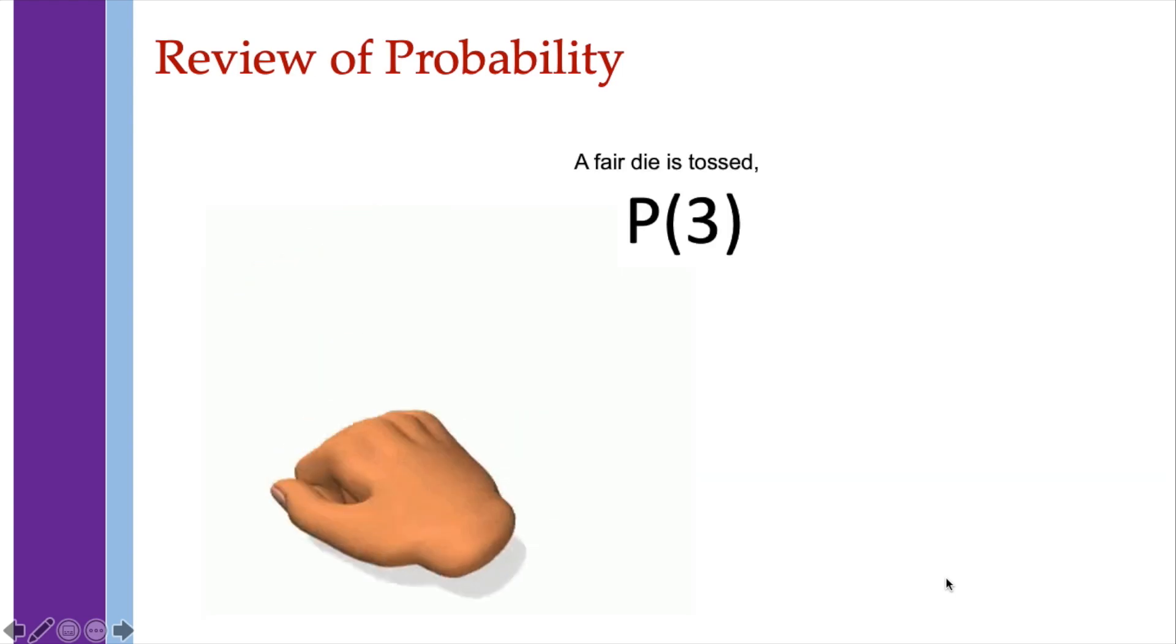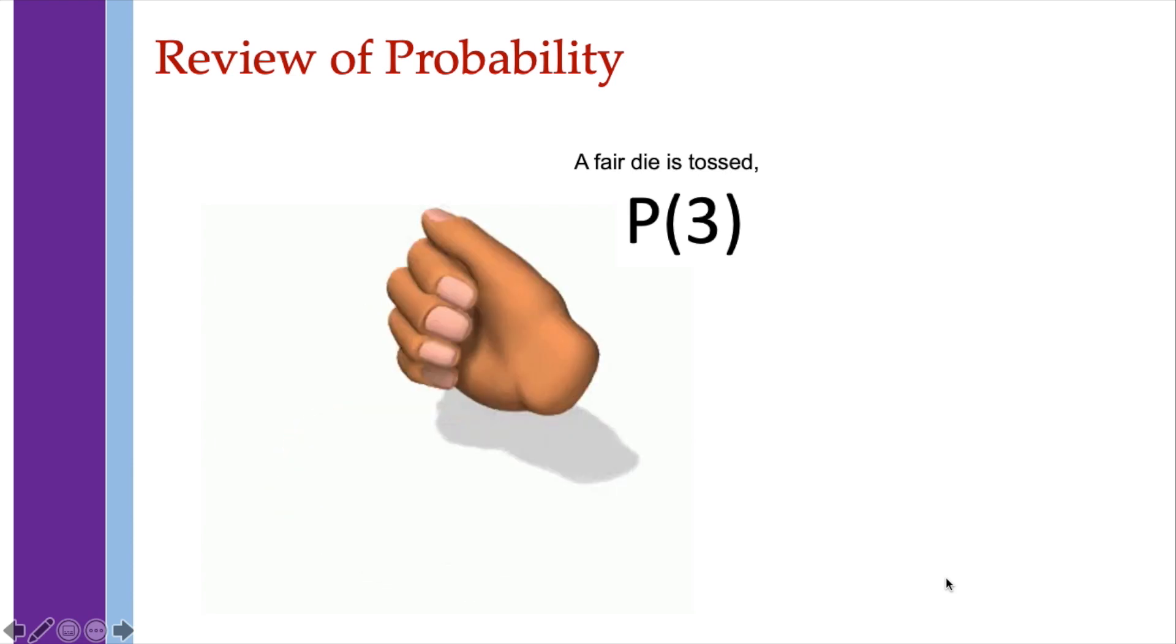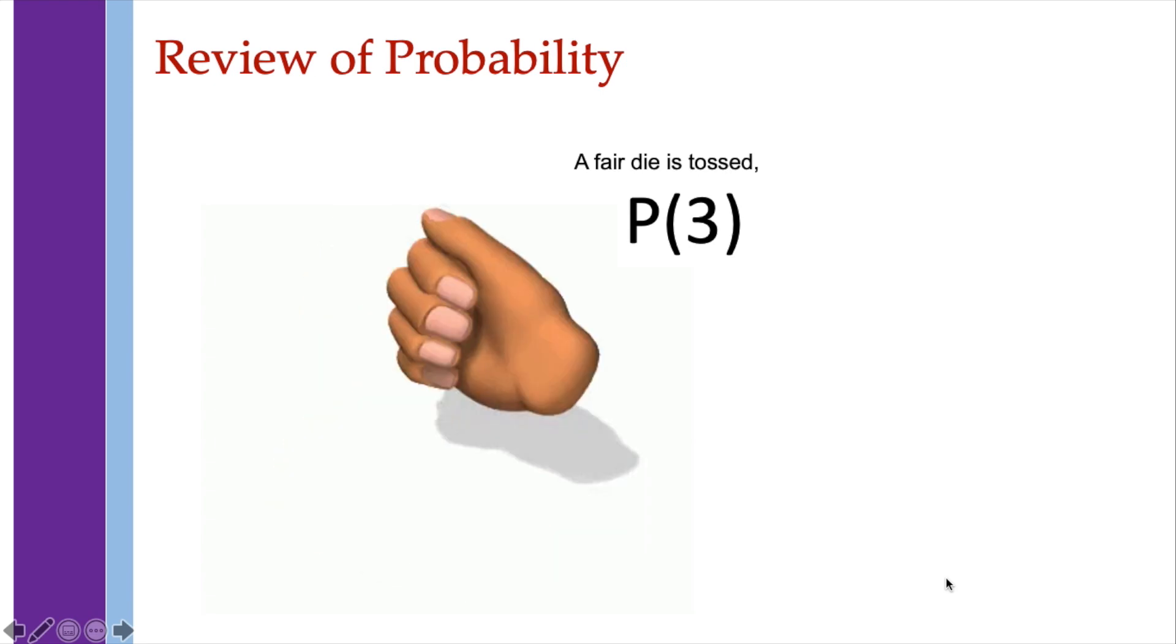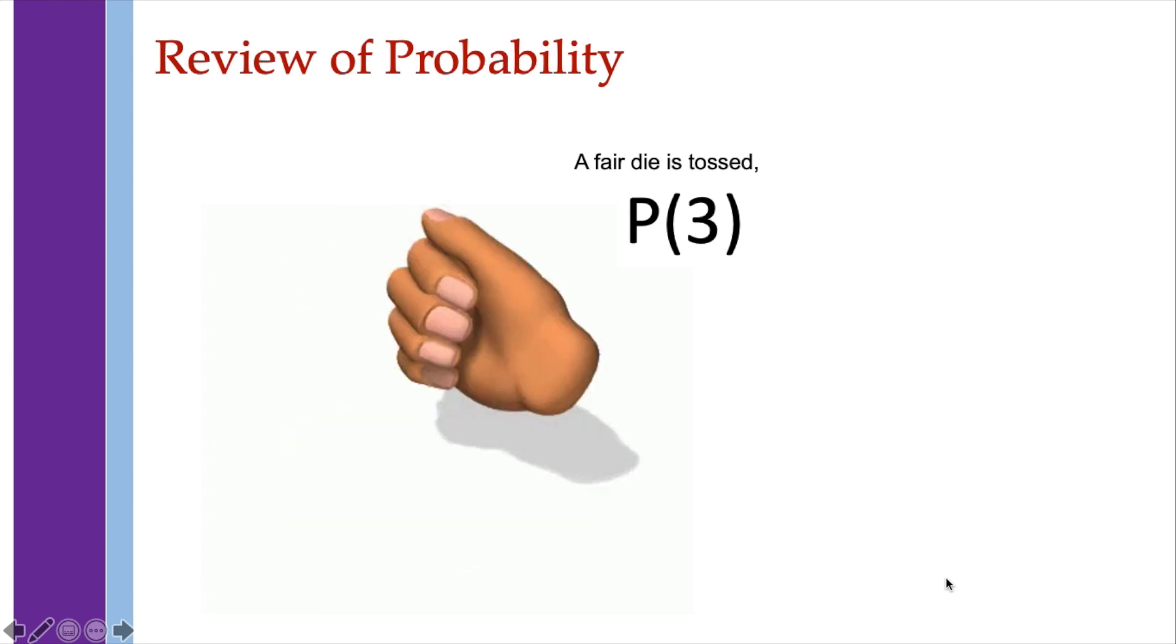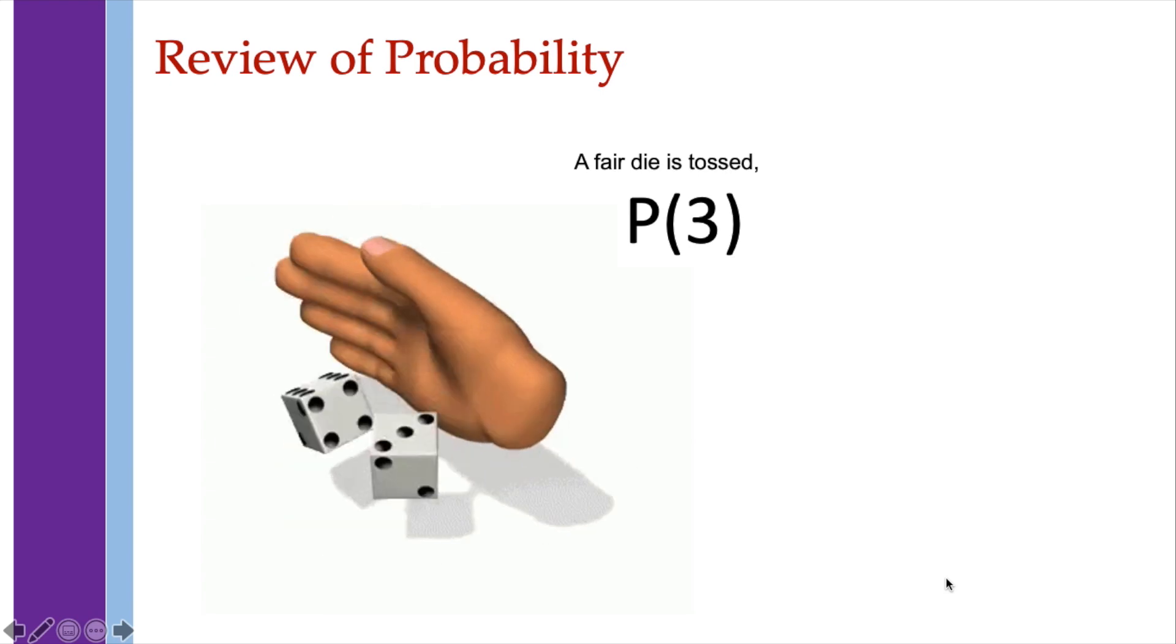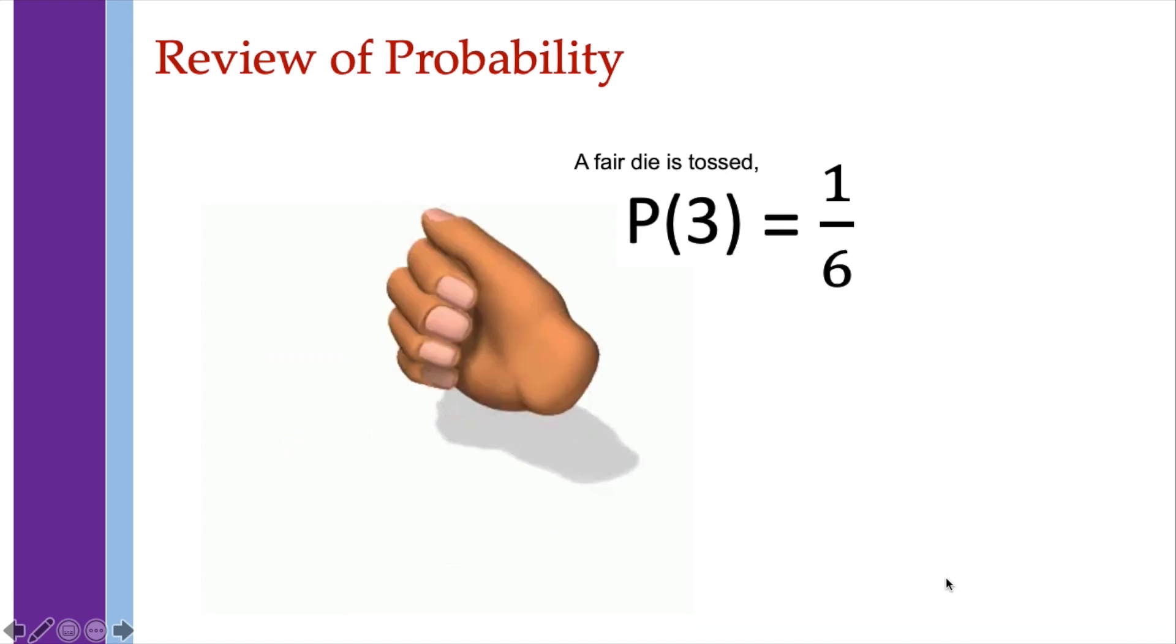When a fair die is tossed, when we say fair die, it means that the probability of each of the 6 possible outcomes, which are 1, 2, 3, 4, 5, and 6, are all equal. So the probability of getting a 3 is 1 out of 6.